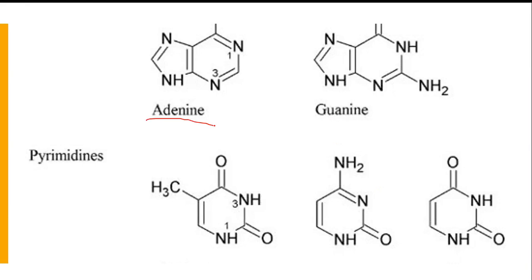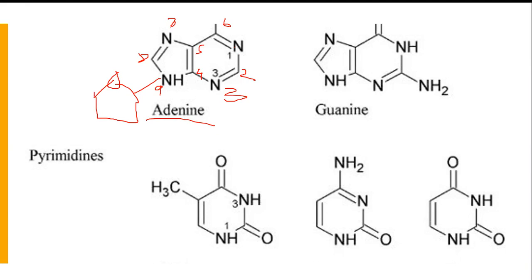Here is the structure of adenine. The carbon numbers start from one, two, three, four, five, six, then seven, eight, nine. The ninth number carbon is attached with the ribose sugar, where phosphate (PO₄) is also present, along with the three prime OH group.